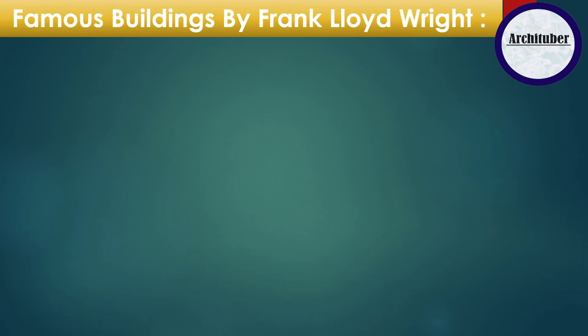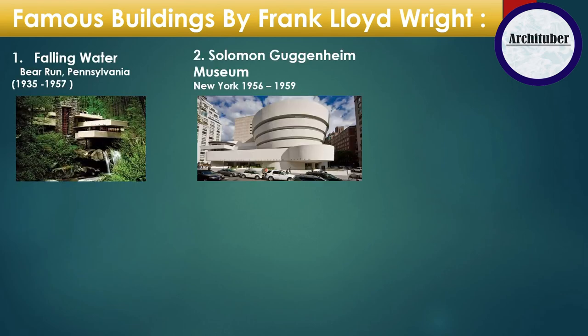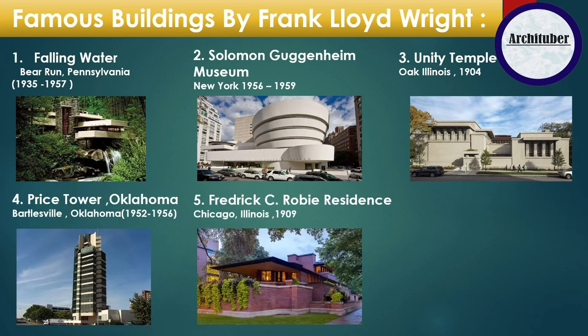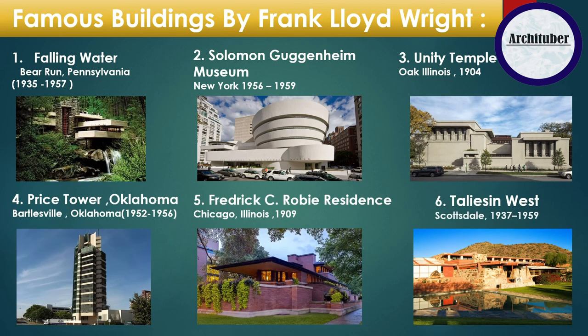Frank Lloyd Wright designed some very famous structures in America and all around the world. These are some of his famous works: Fallingwater, Guggenheim Museum, Unity Temple, Price Tower, Robie Residence, and Taliesin West.